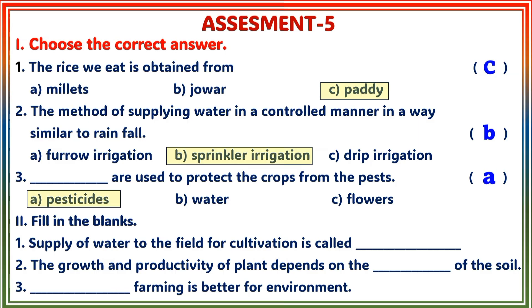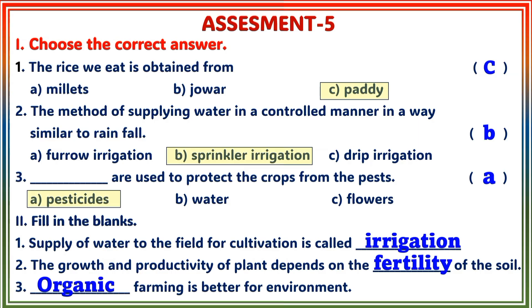Section 2: Fill in the blanks. 1. Supply of water to the field for cultivation is called — Answer: Irrigation. 2. The growth and productivity of a plant depends on the — of the soil. Answer: Fertility. 3. — farming is better for the environment. Answer: Organic.